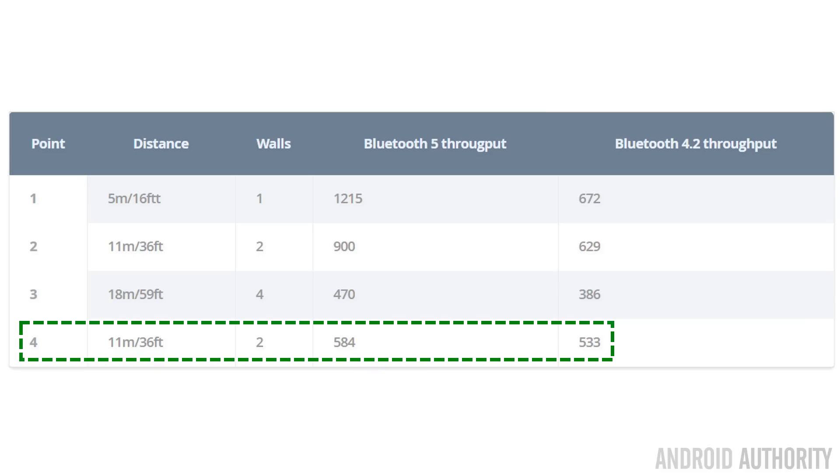The fourth test at a different place in the house gave 584 kilobits per second for Bluetooth 5 and 533 kilobits per second for Bluetooth 4.2. Although that location was closer than point three, the internals of a house — furniture, wall layout, the way signals bounce around — clearly affect results differently. Your measurements will differ depending on the building you're using. To recap: when Bluetooth 5 has a clear path or just one wall between devices, speeds are much better than Bluetooth 4.2, but as range and obstacles increase, the difference becomes less obvious.